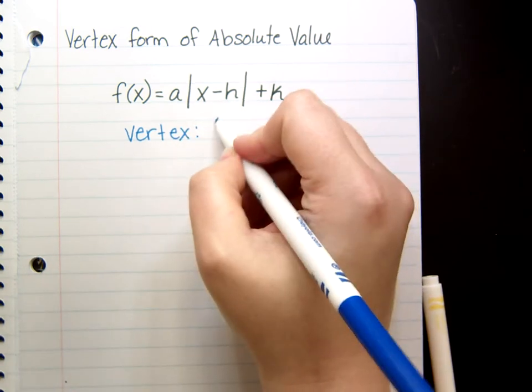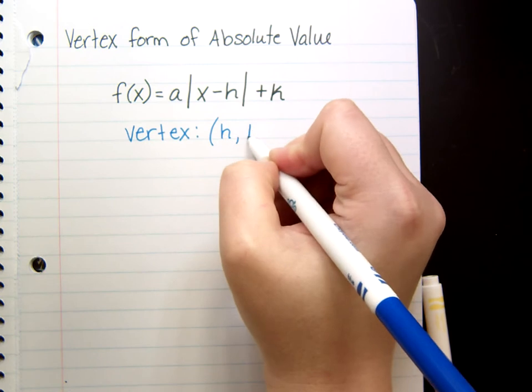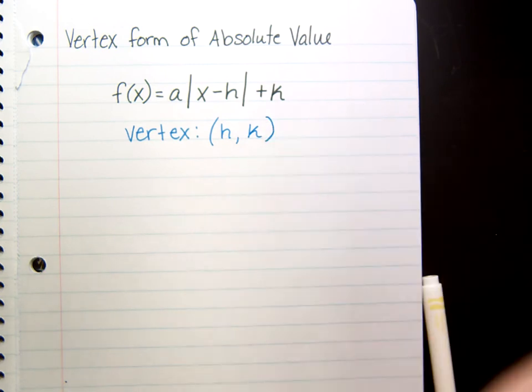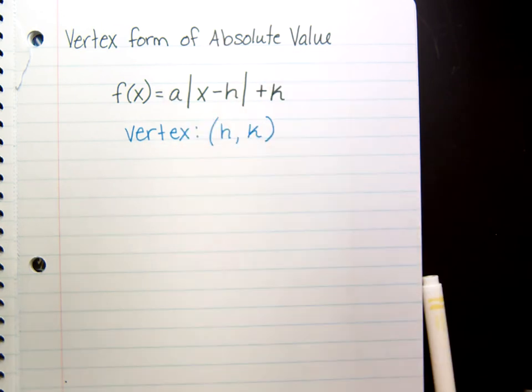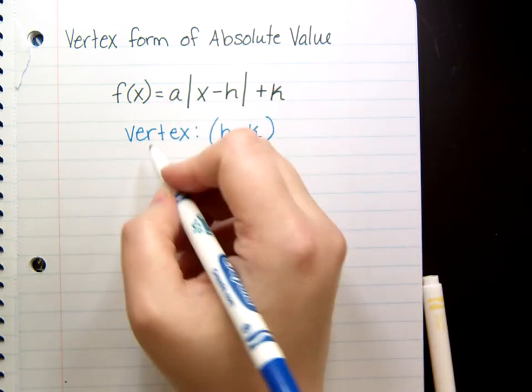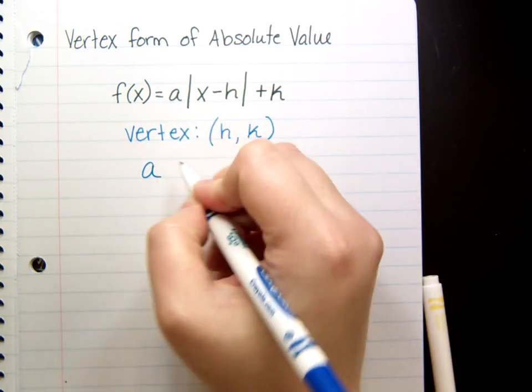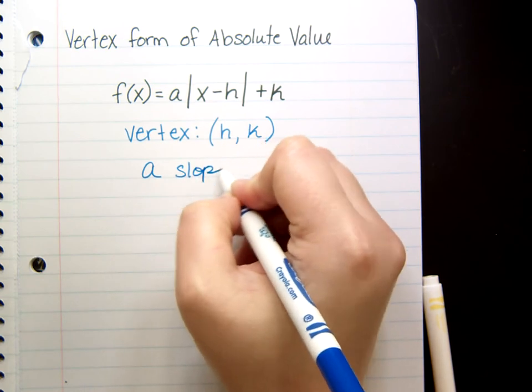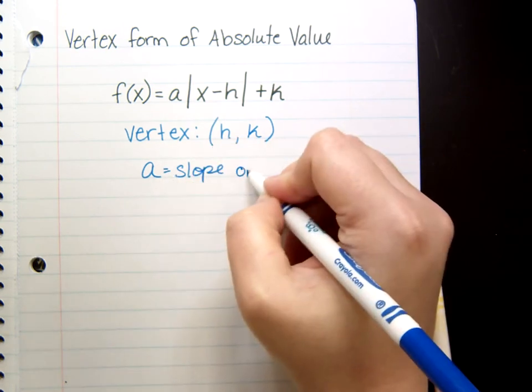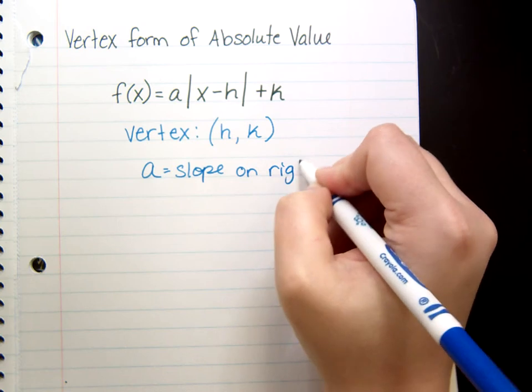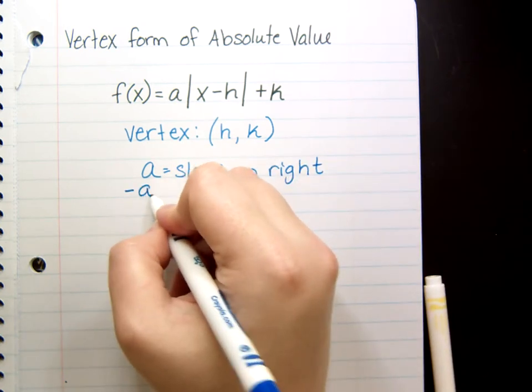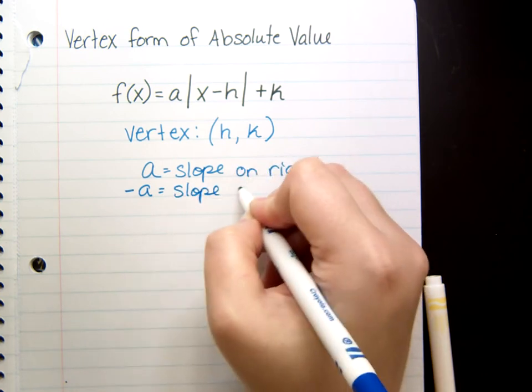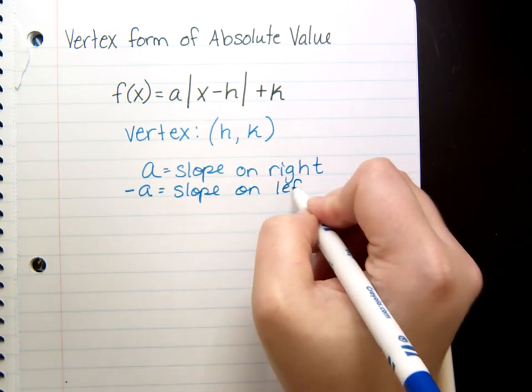So, the vertex is located at h,k. Now, the a value tells us the slope on the right side of your vertex. Negative a would tell us the slope on the left side of the vertex.